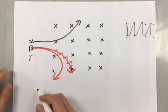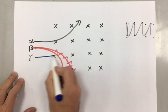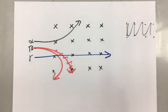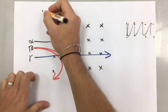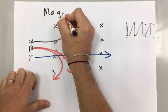The gamma ray, once again, no charge, is not affected, and so it continues traveling straight. That is how particles are deflected in a magnetic field.